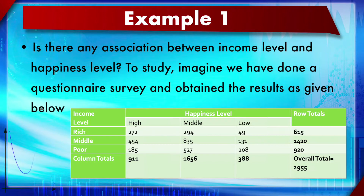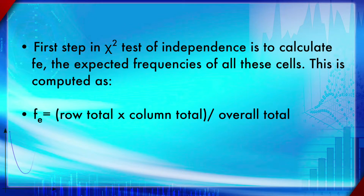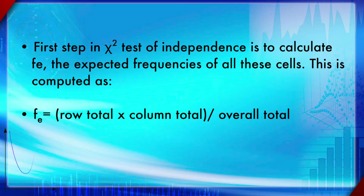The first step is to calculate row totals, column totals, and the overall total. The next step is to calculate FE, the expected frequency. The formula is: FE = (row total × column total) / overall total. You calculate this for each cell individually, and the FE will differ for each cell in the table.